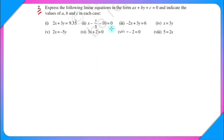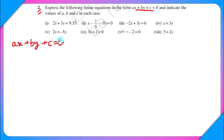We are going to solve this question from the chapter of Linear Equations in Two Variables. The question states: express the following linear equations in the form ax + by + c = 0 and indicate the values of a, b, c in each case. There are 8 parts; I am going to solve about 4 to 5 parts and the rest you will be able to solve yourself. In the expression ax + by + c = 0, a, b, c are constants and x and y are the variables — this is the standard form of a linear equation in two variables.